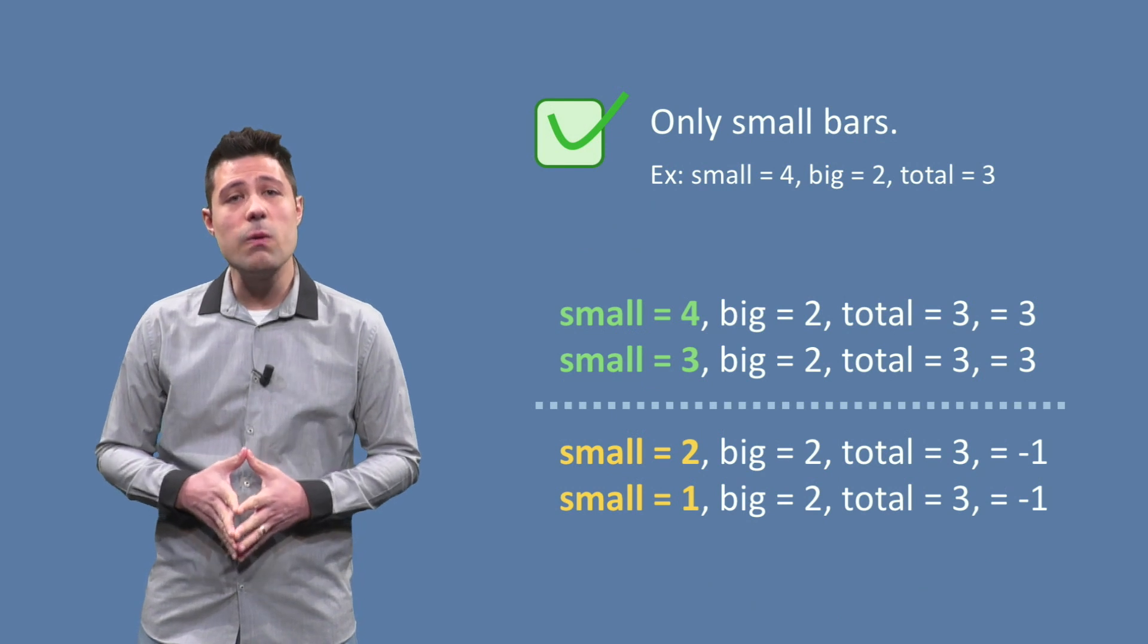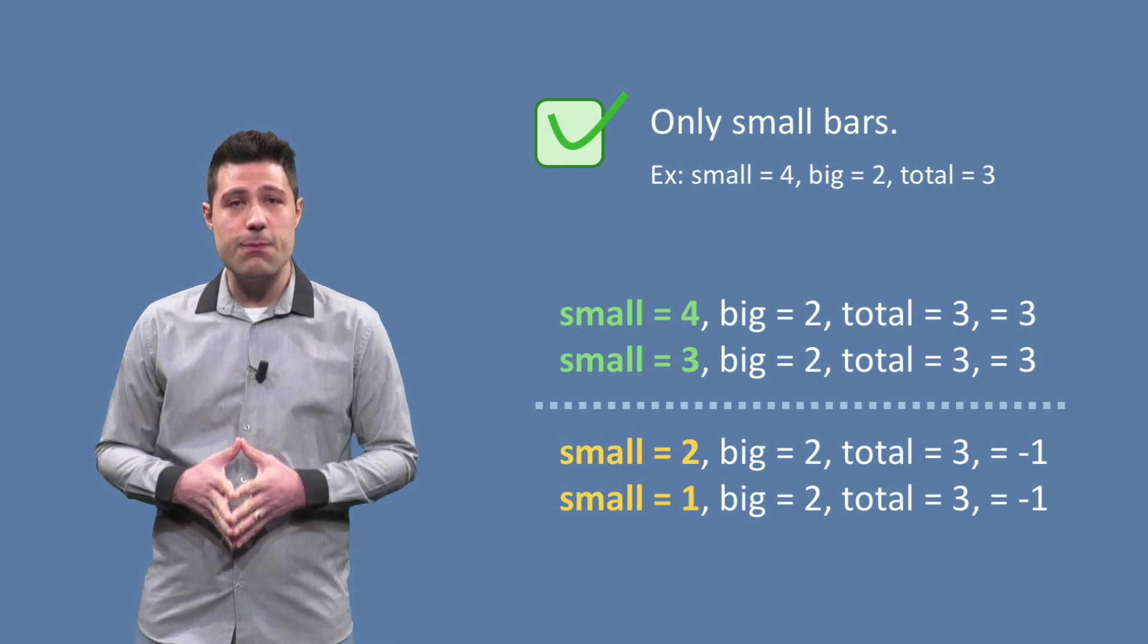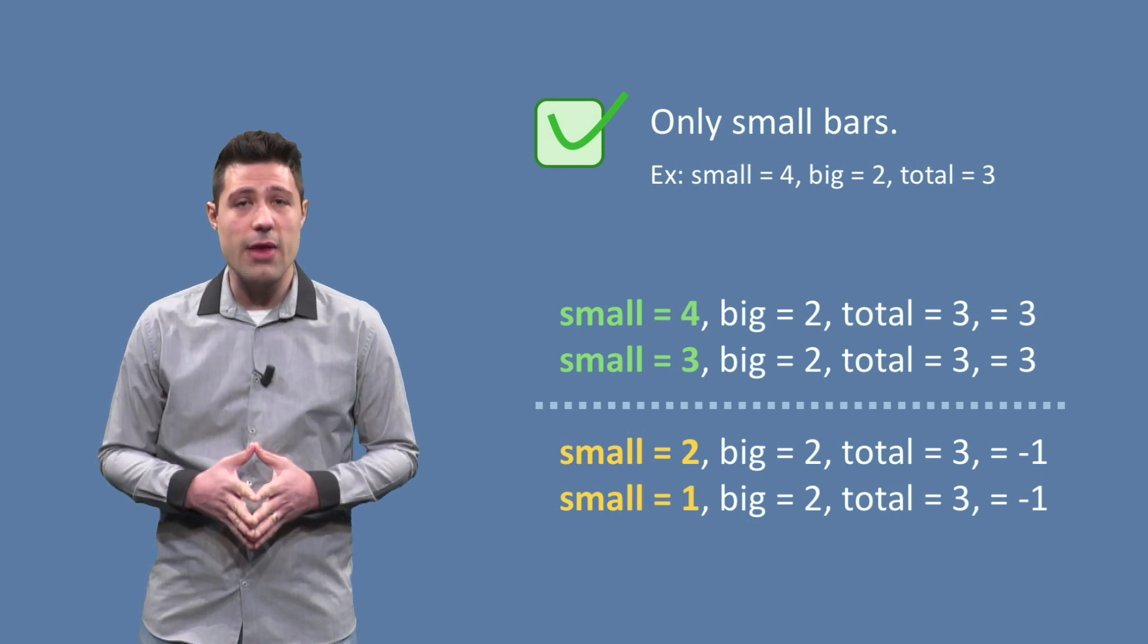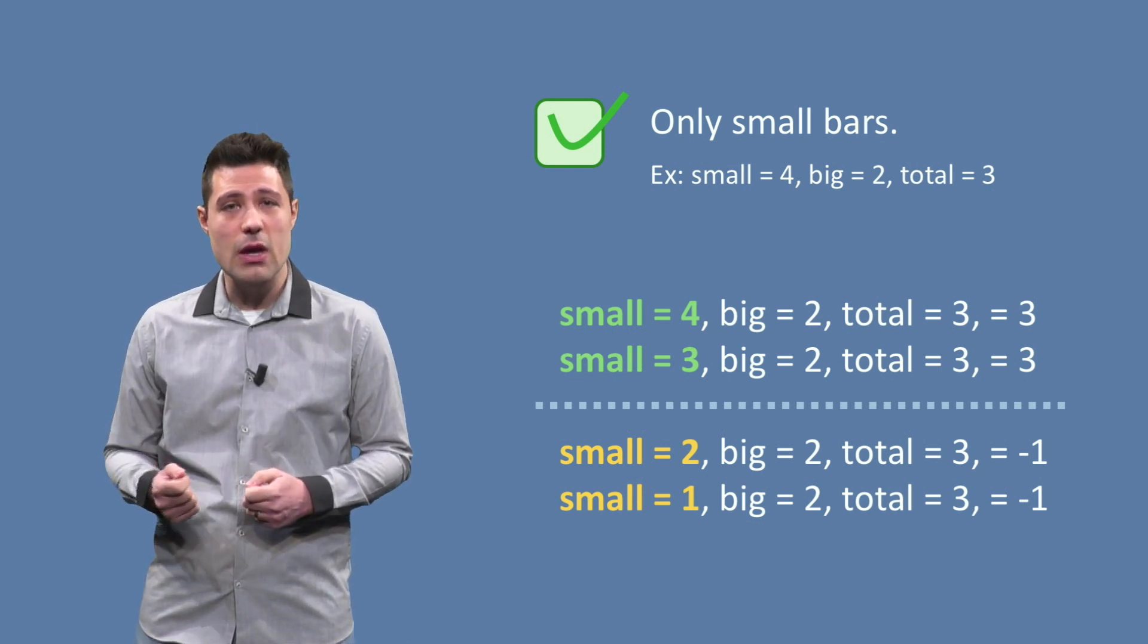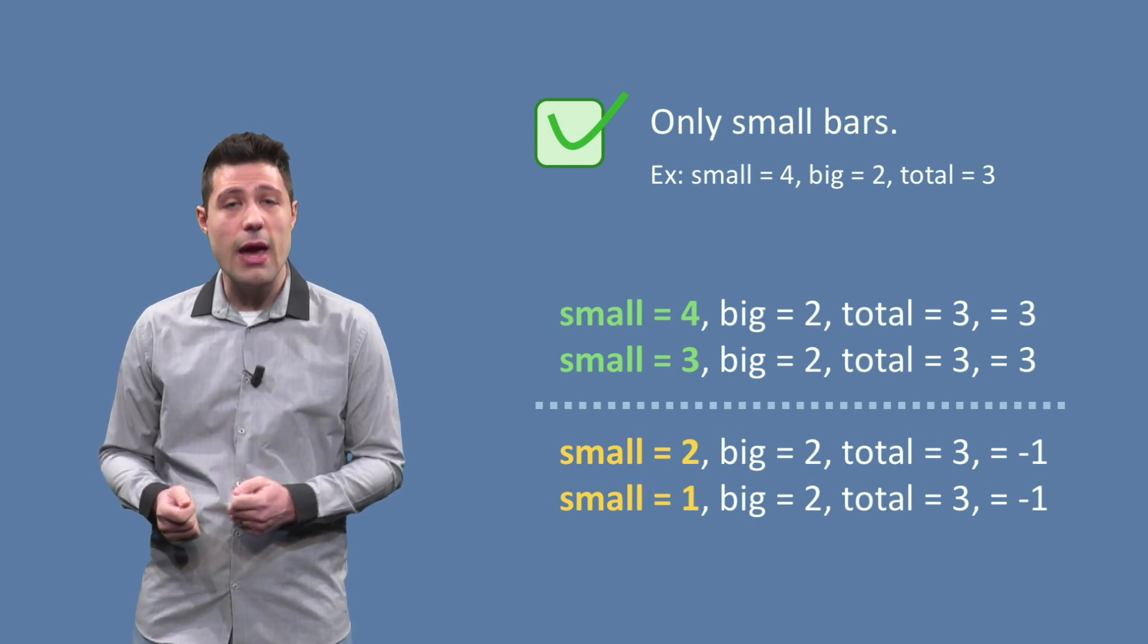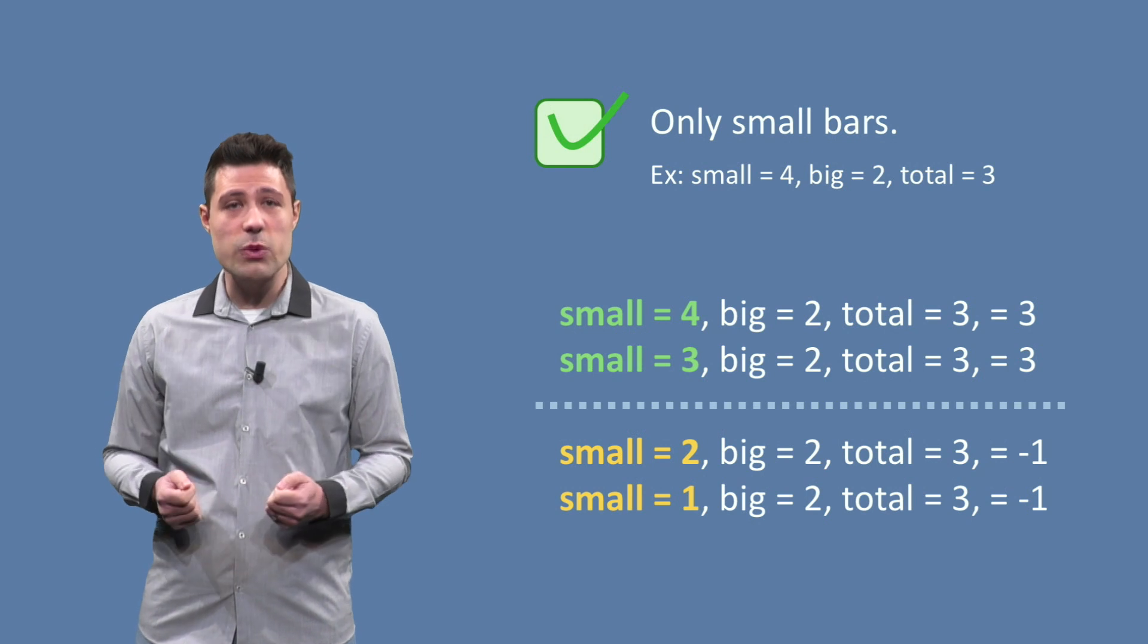Finally, the last partition, only small bars. If we have big equals 2 and total equals 3 as a starting point, then the boundary happens when small is between 3, which then means we have a solution that only uses small bars, and 2, which then means we don't have a solution.